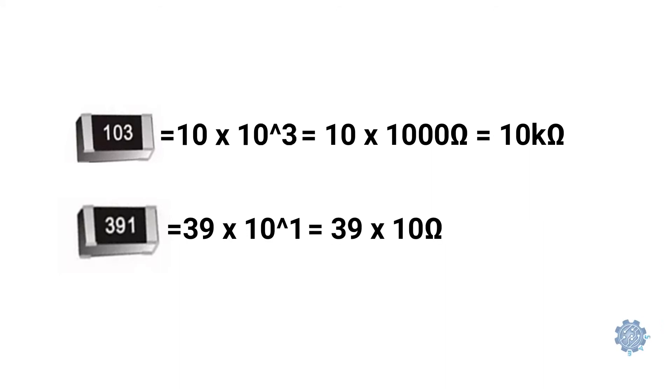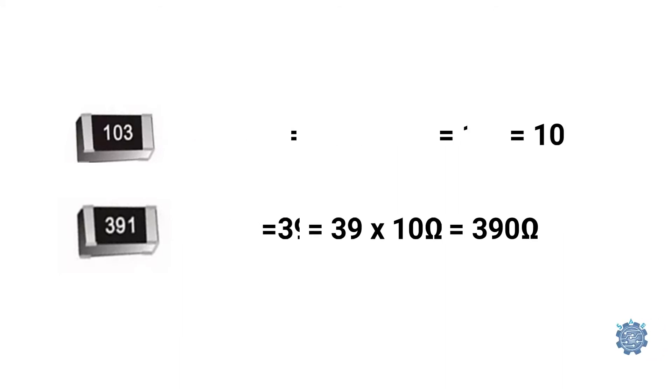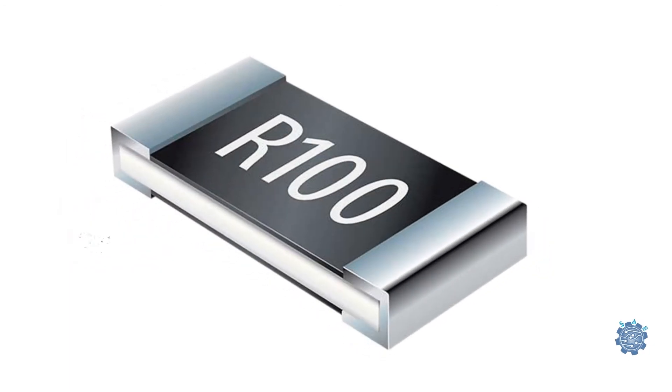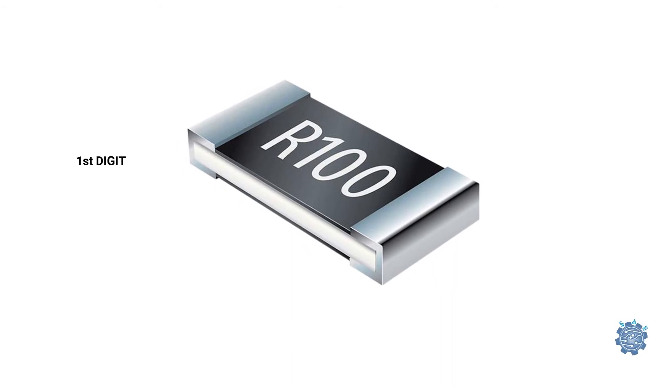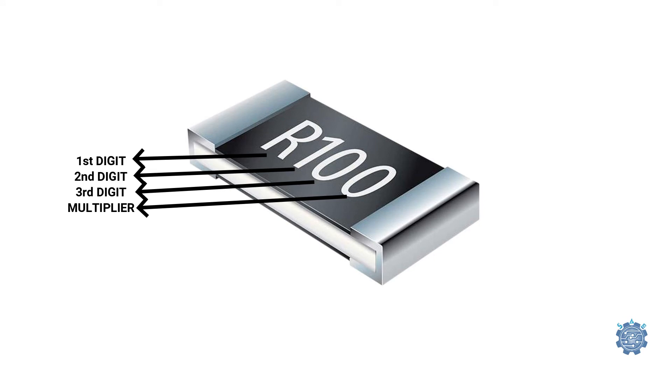In case of 4 characters code, we see a similar system with the difference that here we have three significant digits and the fourth character is the multiplier.